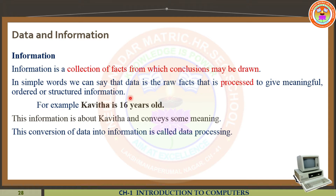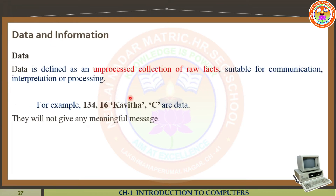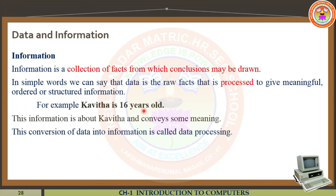For example, using the same values from the previous slide — 134, 16, one girl's name, and one alphabet — that is not a meaningful message. But under information, for example: 'Kavitha is 16 years old.' This sentence gives some meaningful information. So this is known as information. Did you understand what is data and what is information? Once the data is processed, we get information — only then does that information have a meaningful message.